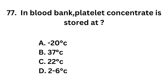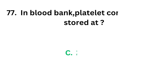Question number 77. In blood bank, platelet concentrate is stored at: Option A: minus 20 degree Celsius. Option B: 37 degree Celsius. Option C: 22 degree Celsius. Option D: 2 to 6 degree Celsius. The correct answer is option C, 22 degree Celsius. In blood bank, platelet concentrate is stored at 22 degree Celsius.